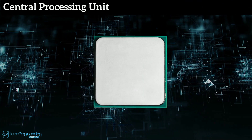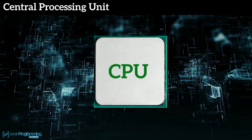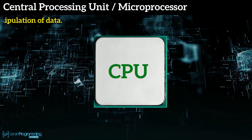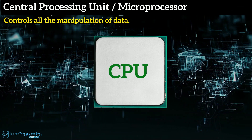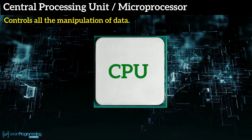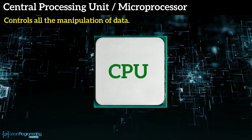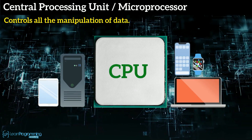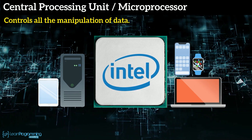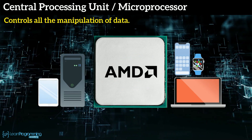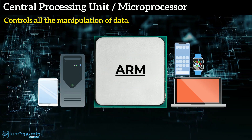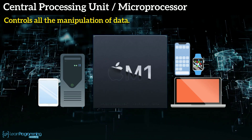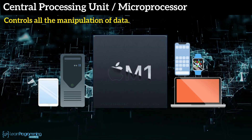The computer's central processing unit — CPU, or microprocessor as most of us refer to it — controls all the manipulation of data. Some common CPUs used by consumers in computers, laptops, tablets, and smart devices are manufactured by Intel and AMD. There are also newer CPUs based on ARM architecture, and Apple have recently introduced Apple Silicon.